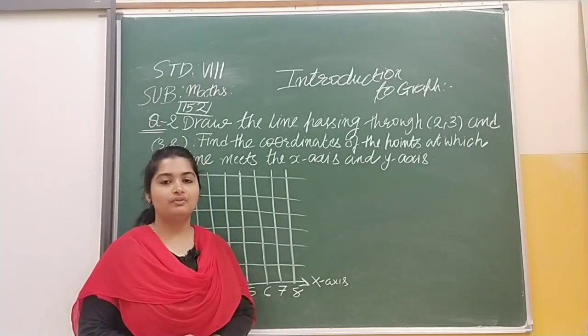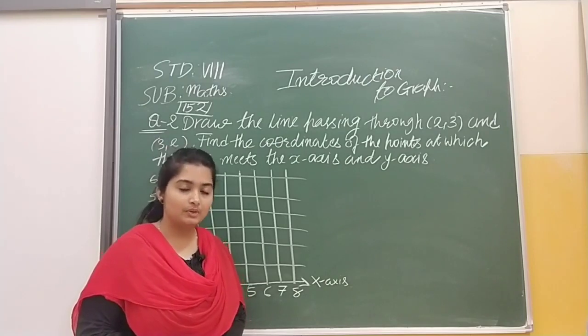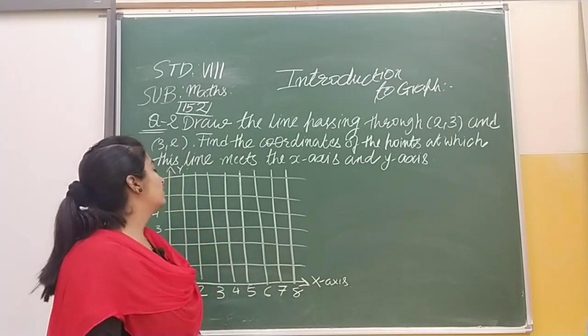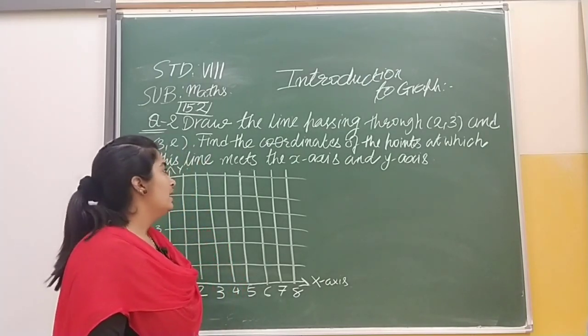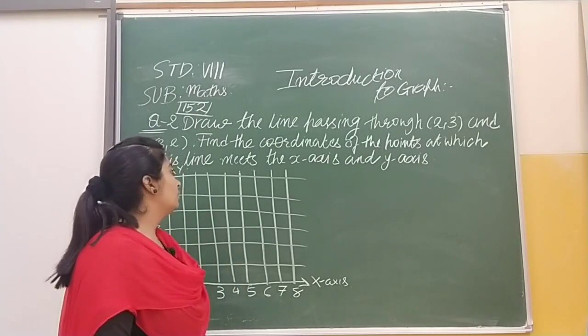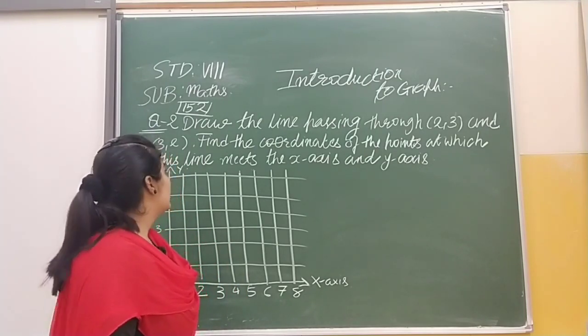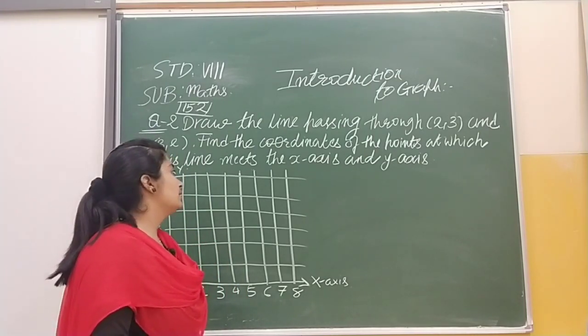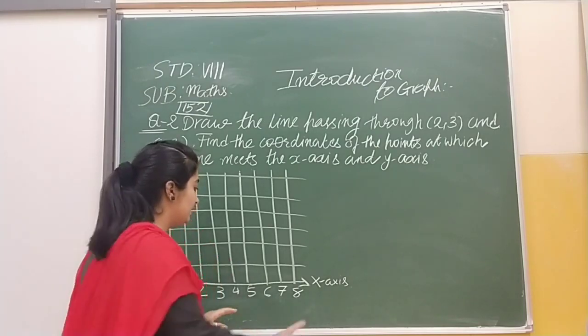Here we have question number 2 of exercise 15.2. The question says draw the line passing through (2,3) and (3,2). Find the coordinates of the points at which this line meets the x-axis and y-axis.